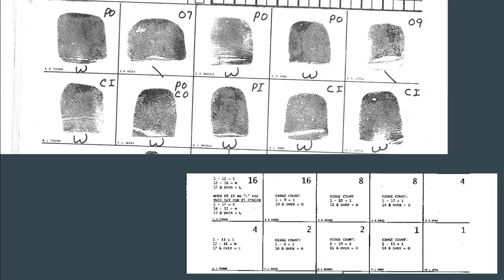So in this case, 8 plus 4 plus 2 plus 1 is 15, plus we always add 1, so the numerator for our primary is 16. If you had a numerator of just 1, that would tell you automatically there are no whorls, because all values are 0 and then you add 1. So our primary numerator is 16.